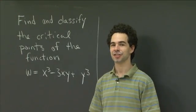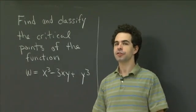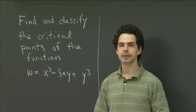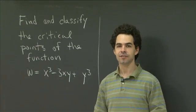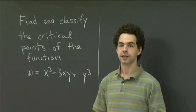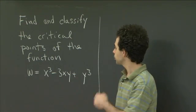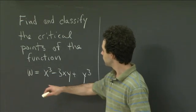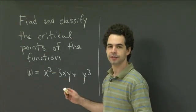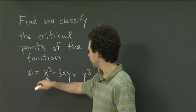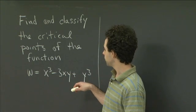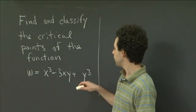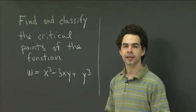Hi, welcome back to recitation. In lecture, you've been learning about critical points of functions, how to find them using the first derivatives, and how to classify them using the second derivative test. So I have a question here for you about that. We have a function w, it's a function of two variables x and y, and it's given by w equals x cubed minus 3xy plus y cubed.